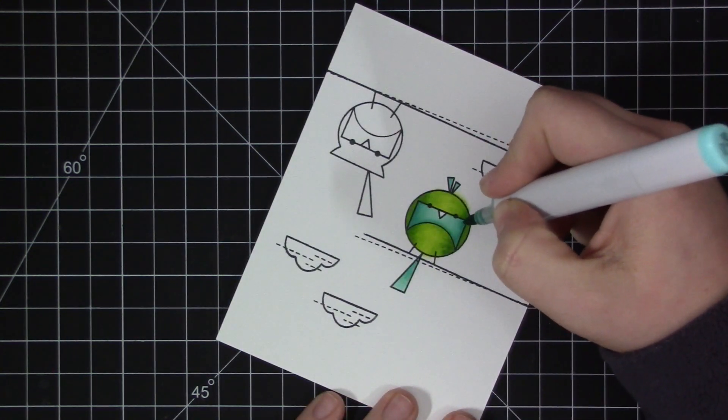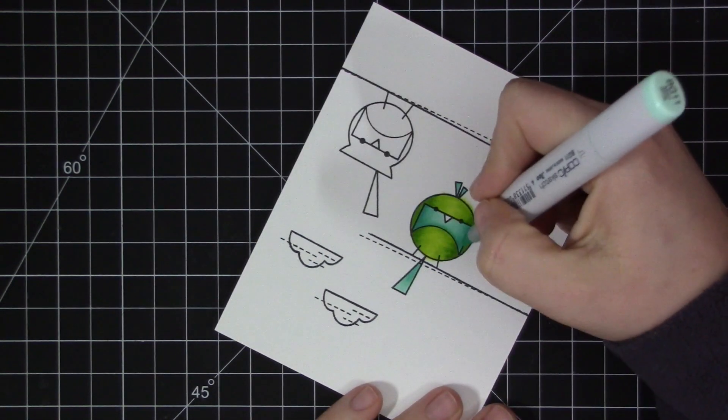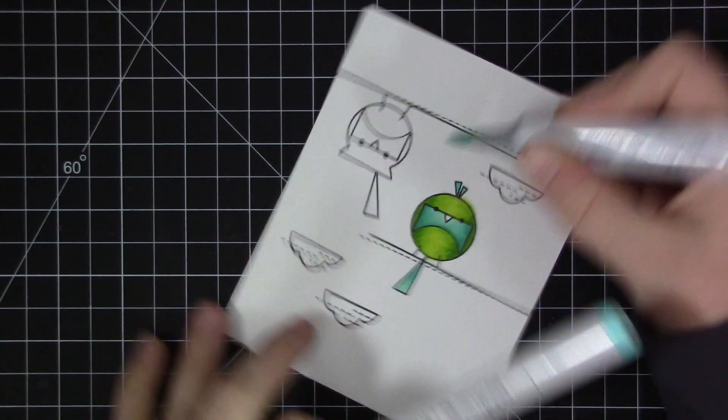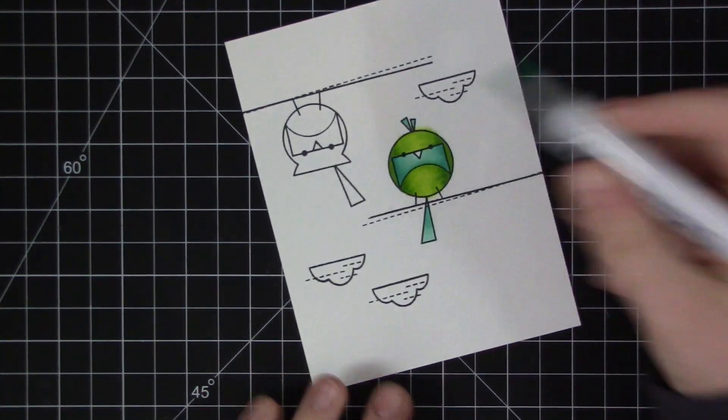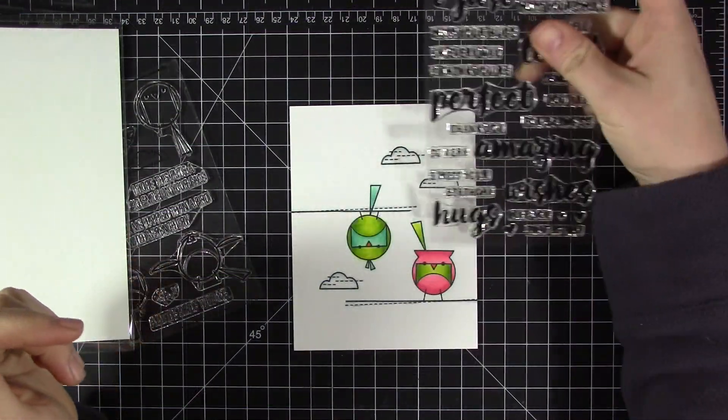When I finished doing all the coloring of the birds, I took an aqua color Copic marker, just a lighter color, and kind of went around all of the images, just a very thin line around each image, just to kind of make them stand out a little bit more off of the white background.